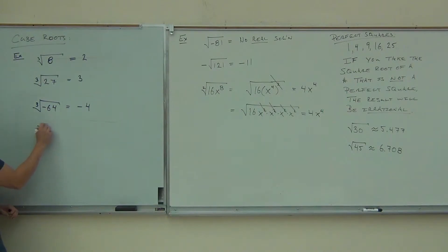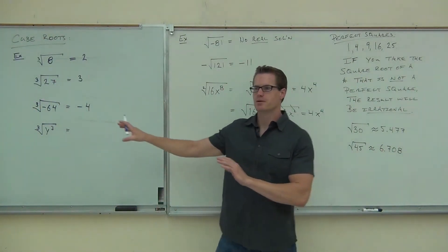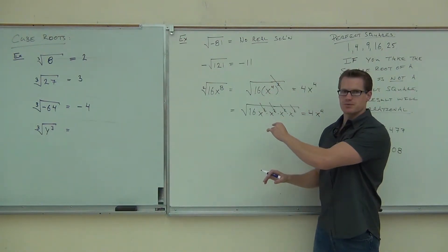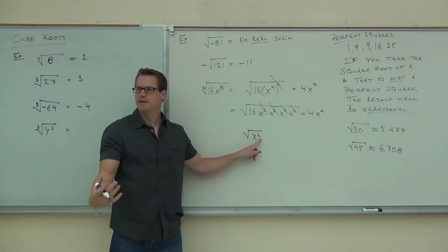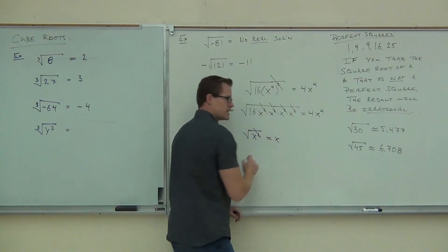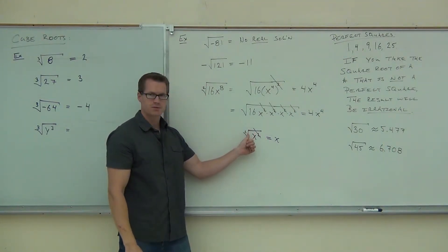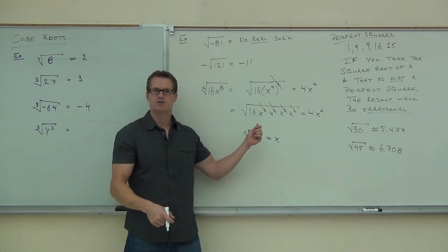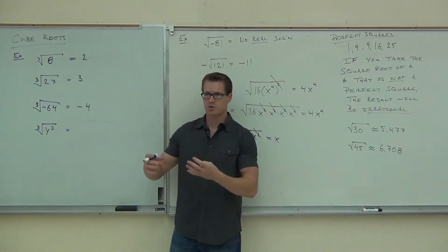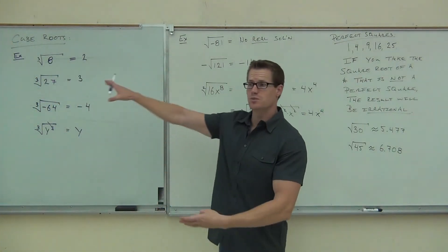Is this possible? Cube root of y to the third power. Compare this to what we did with square roots: the square root of x squared equals x, because square root and square are inverse operations. If we match up the power with the root — no matter what they are — they are inverse operations. A cube undoes a cube root and a cube root undoes a cube. So the cube root of y³ equals y. Just like we can simplify squares inside square roots, we can simplify cubes inside cube roots.